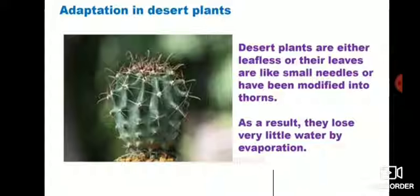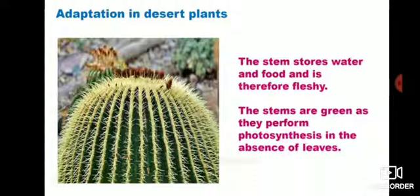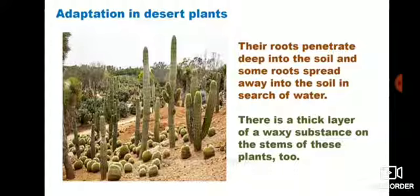Desert plants are either leafless, or their leaves are like small needles as you can see in the picture, or have been modified into thorns. As a result they lose very little water by evaporation. The stems store water and food and are therefore fleshy. The stems are green as they perform photosynthesis in the absence of leaves. Their roots penetrate deep into the soil and some roots spread out in search of water. There is also a thick layer of waxy substance on the stem of these plants.